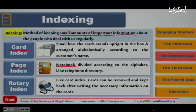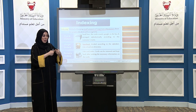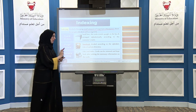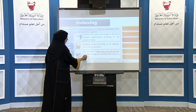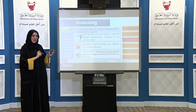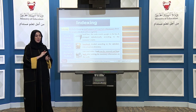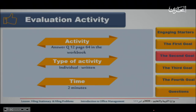The last type is rotary index. As you can see in the picture, rotary means we can move the papers. It is similar to the card index, but the difference is that the cards can be removed and put back. In the rotary index, you can remove a card and replace it after writing the needed information. You can go to question 12, page 64 in the workbook.